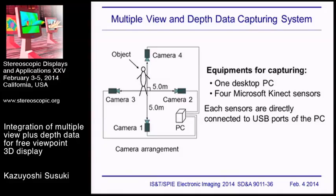This figure shows the multiple view and depth data capturing system. The equipment consists of one desktop PC and four Microsoft Kinect sensors, each directly connected to a USB port of the PC. Camera 1 and camera 4 face each other, and camera 2 and camera 3 also face each other. The distance between two cameras is about 5.0 meters, and the two pairs of cameras intersect at right angles.